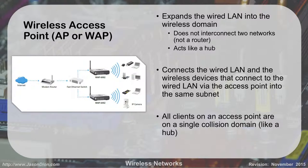An access point itself is not going to do routing for you. Its whole function is just to act as a media converter — it expands the wired LAN into the wireless domain. You can't use it like a router to interconnect networks; it just acts like a hub. Two access points connected to a switch, which connects to the router off to the Internet. All your clients on the access point act as a single collision domain like a hub, which is a security issue — if somebody is on your wireless network, they can see all the traffic if they put themselves into promiscuous mode.